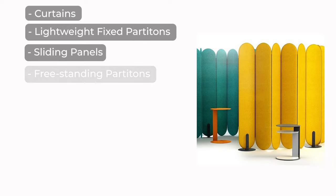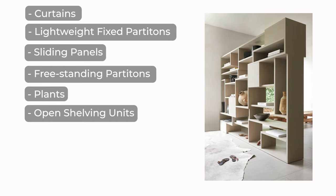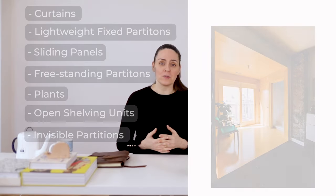We will talk about curtains and lightweight fixed partitions, sliding panels, freestanding partitions, how plants can help divide a room, how to use open shelving units, and finally we will talk about invisible partitions, and how other architectural and decor elements in your home can create the impression of separation between various zones.